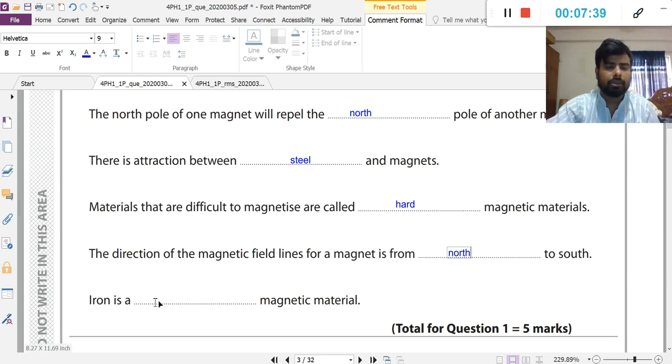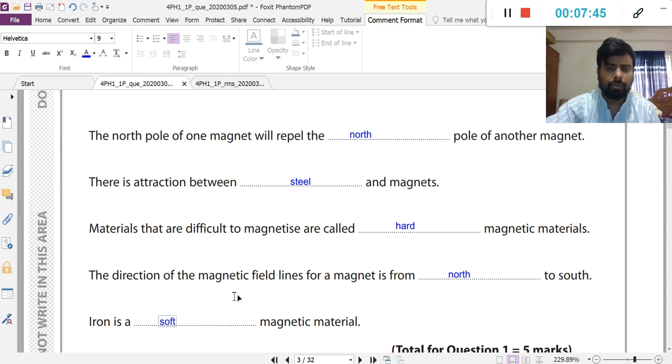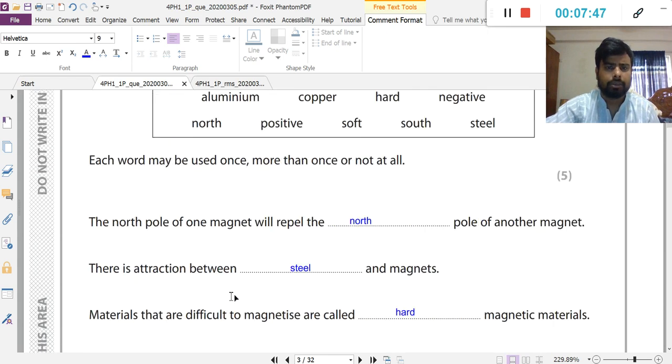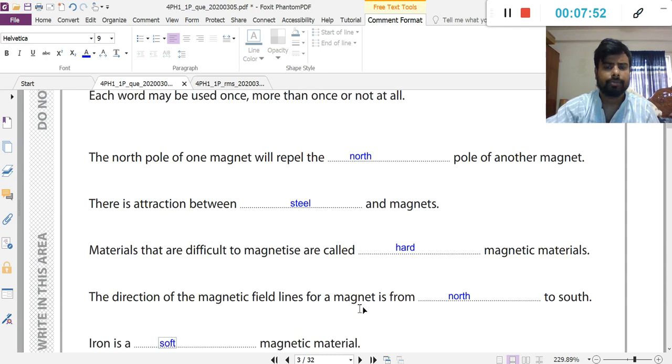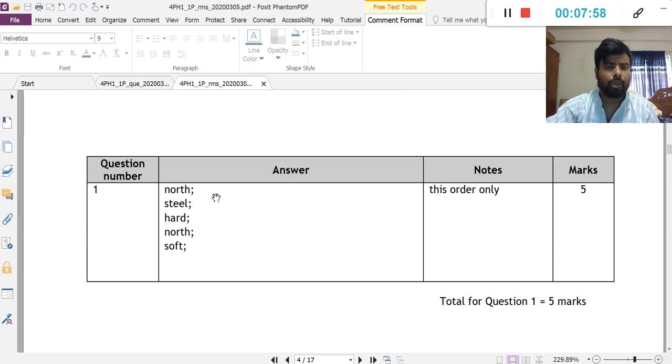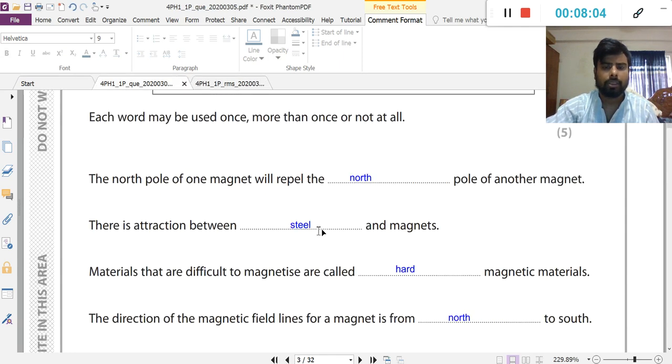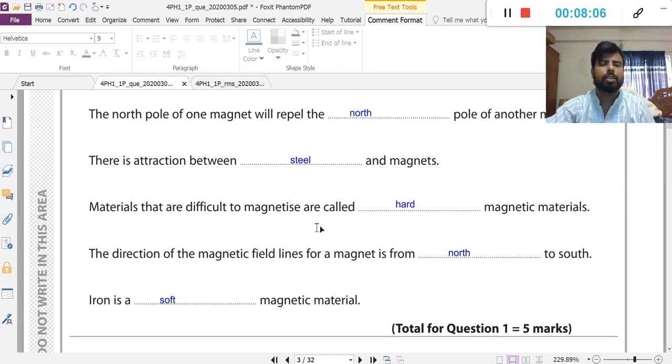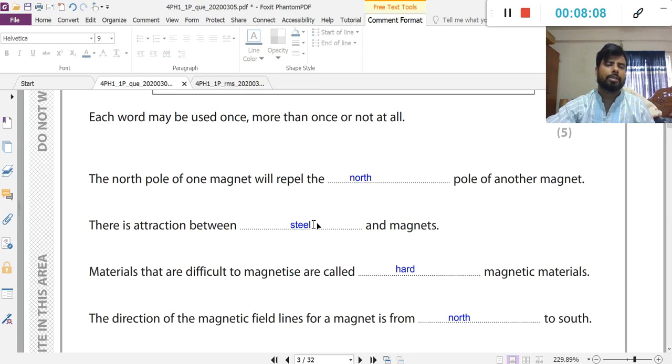Iron is a soft magnetic material. Soft magnetic material. This is my answer. North pole, steel, hard, north, soft. Last one, soft. So this is the answer.